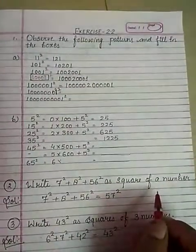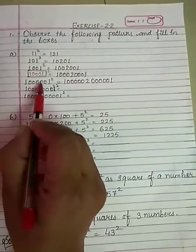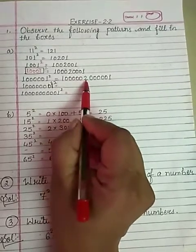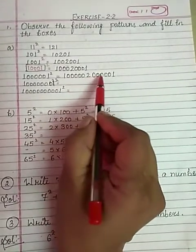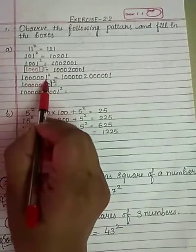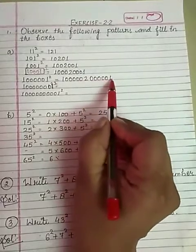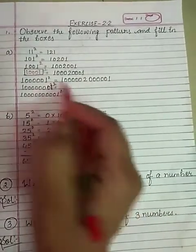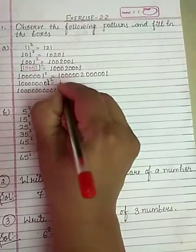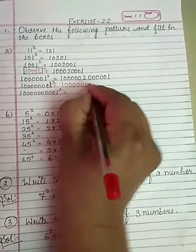One followed by five zeros whole square. One, two, three, four, five zeros — after five zeros, two, then five zeros, then one. It means 1 followed by five zeros, whole square: answer will be 1, five zeros, 2, five zeros, 1. Same pattern: 1 followed by seven zeros given.